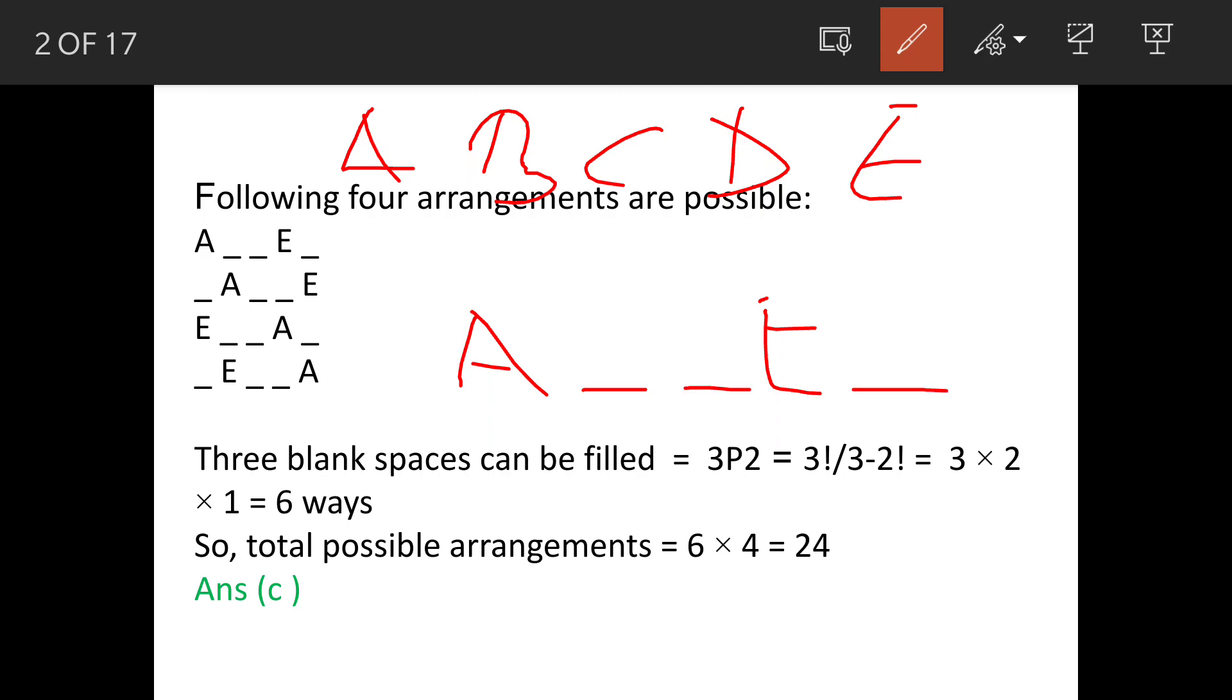So that means one letter is going to be either here or it is going to be here or this letter is going to be in between. So first way possible is this. We have A, two gaps, E and then one gap.